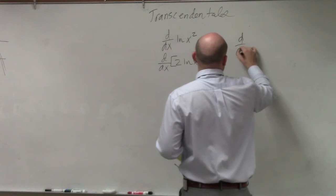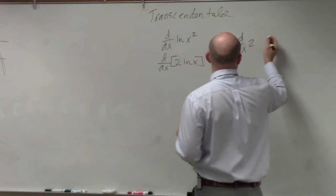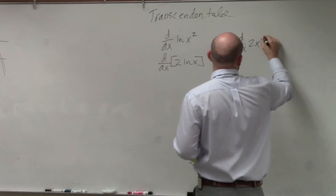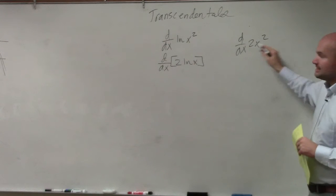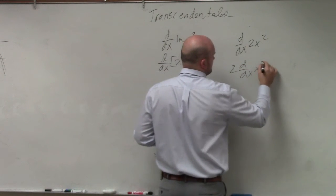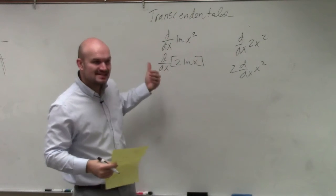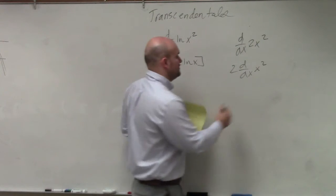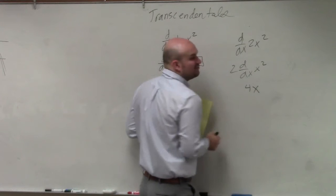And if you guys remember, d over dx of, for instance, 2x squared, like that 2 kind of goes on the outside, right? We can take the constants out and then just take the derivative of x squared, so we end up with 4x.